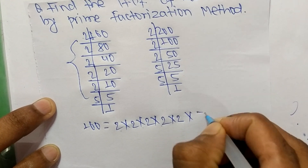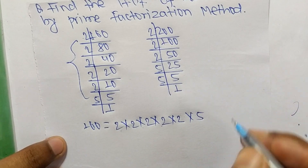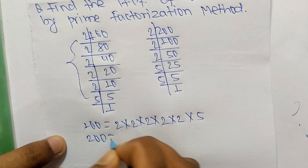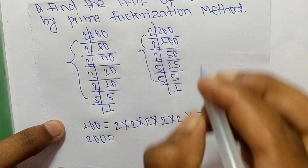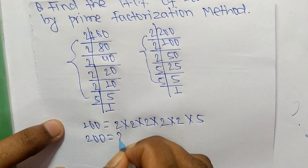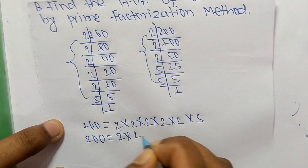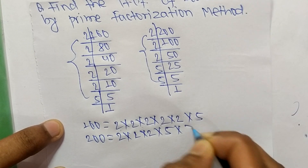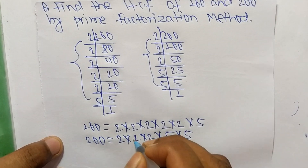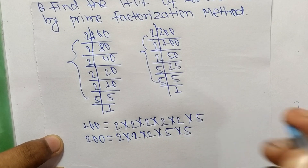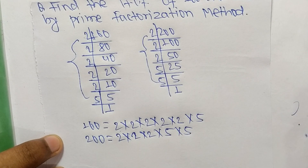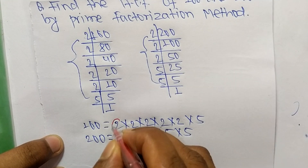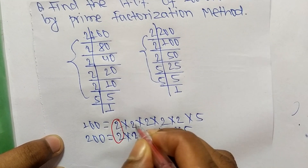Likewise, 200 is equal to 2 times 2 times 2 times 5 times 5. Now we select the common factors from these prime factors. The common factors are: 2, 2, 2, and 5.